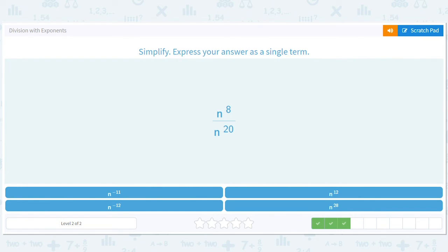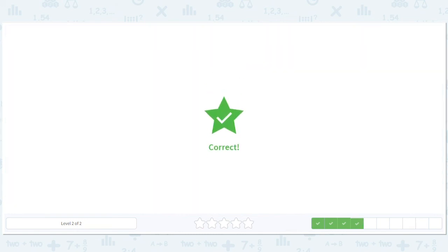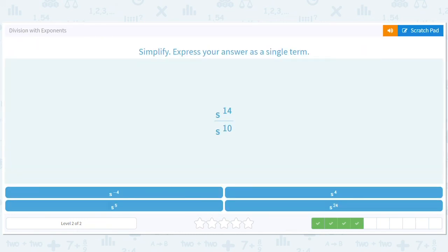Here you have 20 is bigger than 8 it's going to be a negative exponent. 20 minus 8 or 8 minus 20 is negative 12. So you could also say 20 minus 8 is 12 and you know it's going to be negative so you could say negative 12. This is just n to the negative 12. 14 minus 10 is 4 so you have s to the fourth.